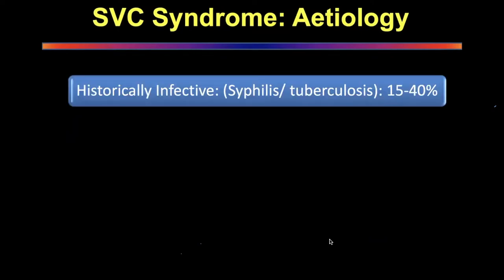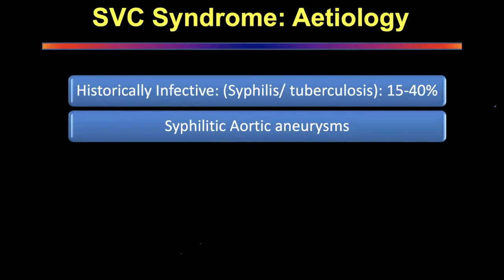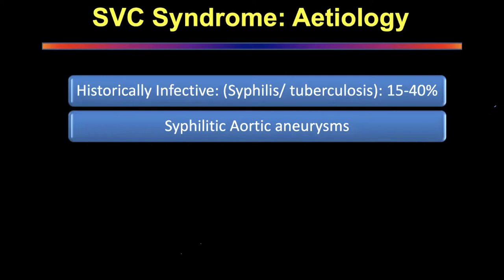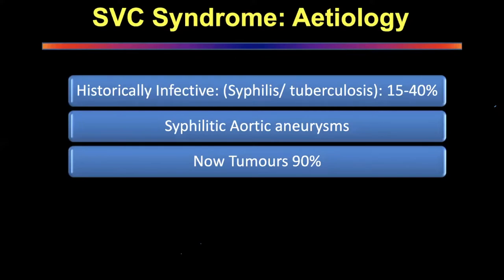Historically, the major etiology was syphilis and tuberculosis — almost 15 to 40% were secondary to syphilis, classically due to syphilitic aortic aneurysm causing aortitis. The aorta became aneurysmal, increased in size, and compressed the SVC. Nowadays we don't see syphilis, and tuberculosis is rarer because drug treatments have become good and patients are treated early. Infective complications are lesser now.